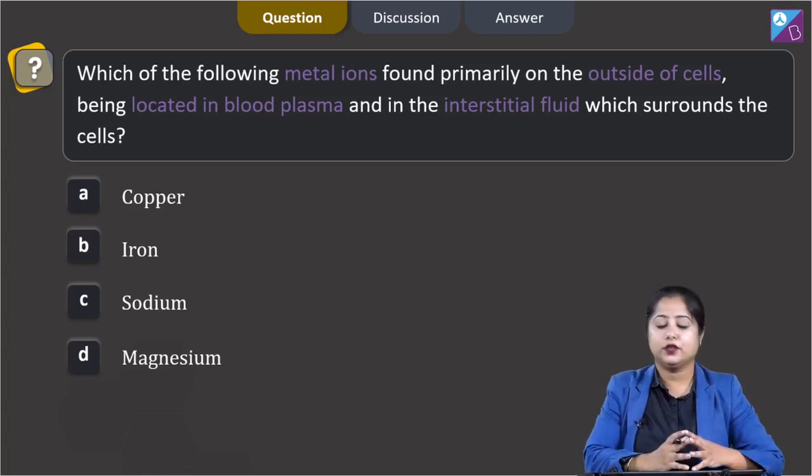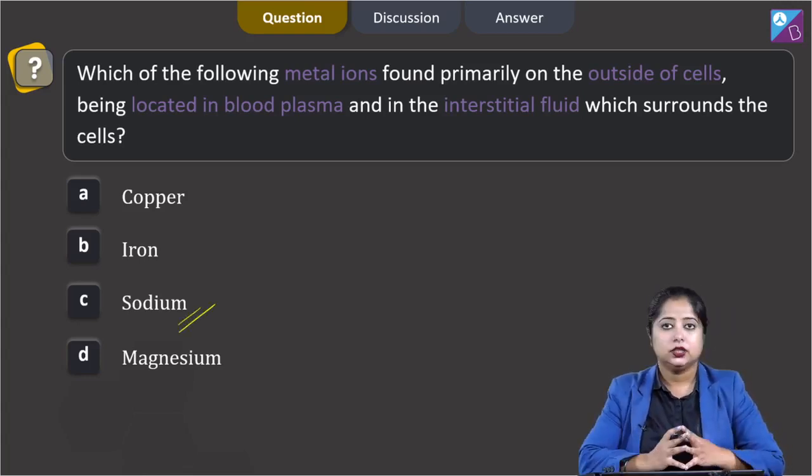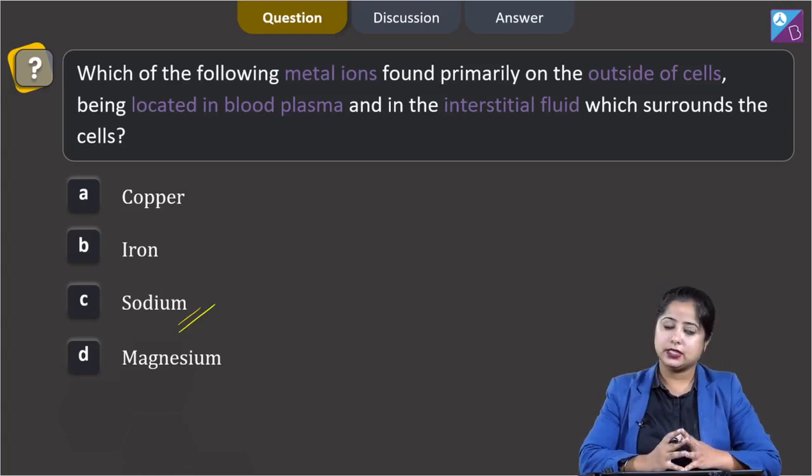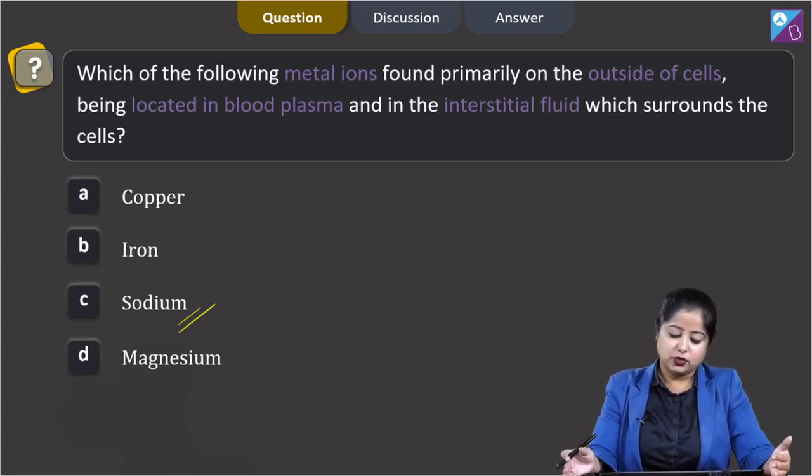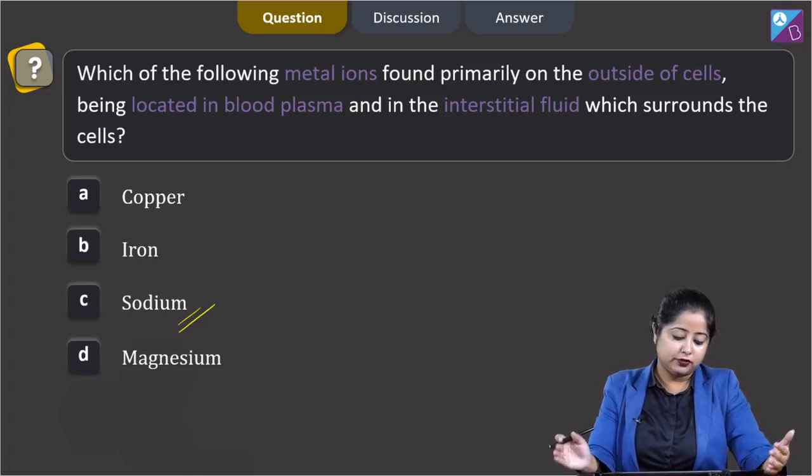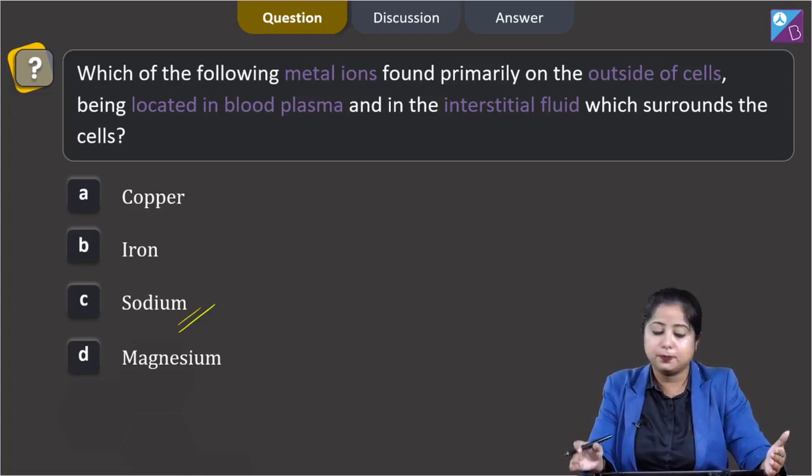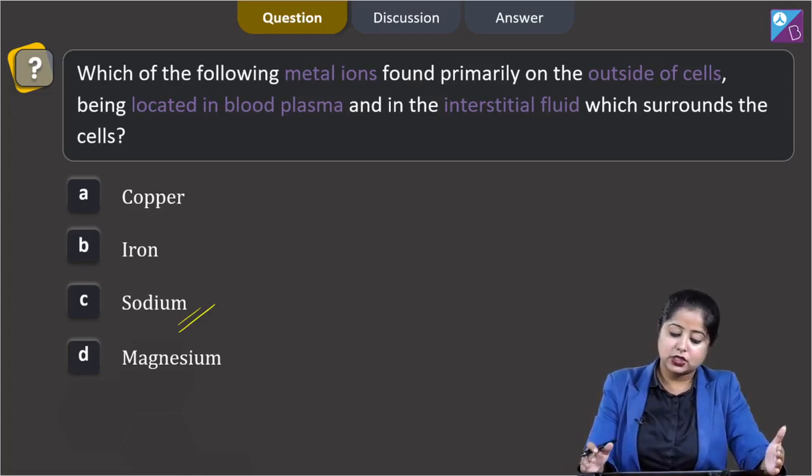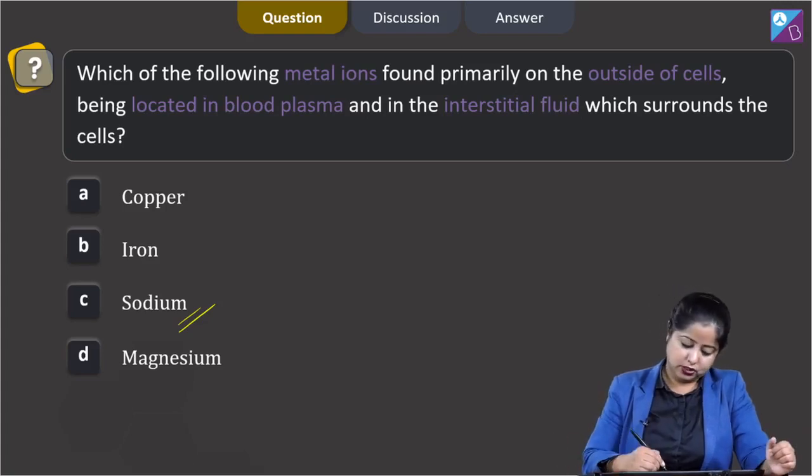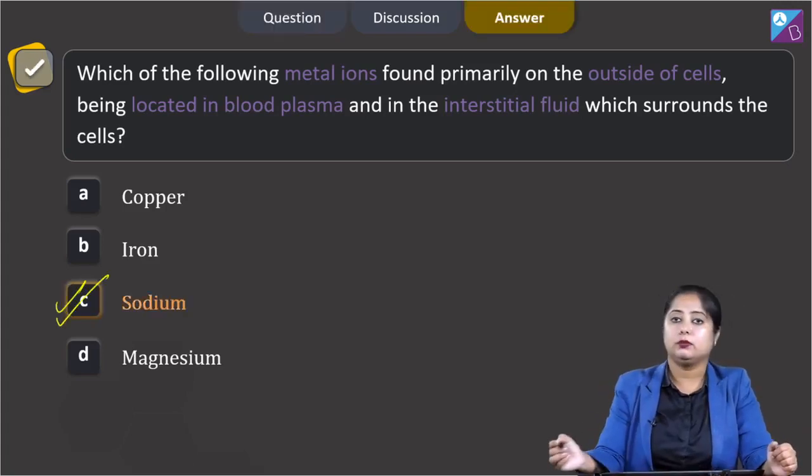Students, the correct answer for this question is sodium ion. This question is directly from NCERT. Sodium ion found primarily on the outside of cells being located in blood plasma and in the interstitial fluid which surrounds the cell. That means the correct answer is option C.